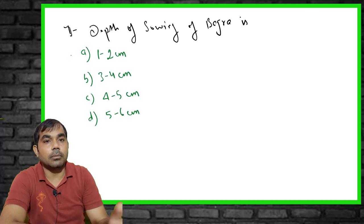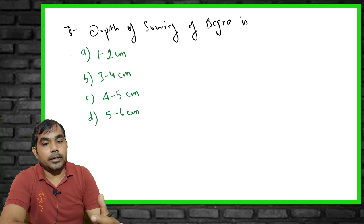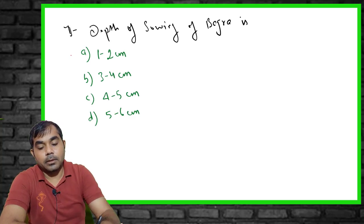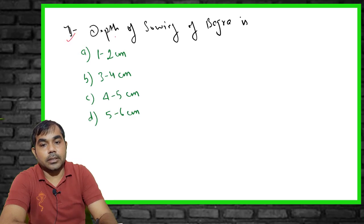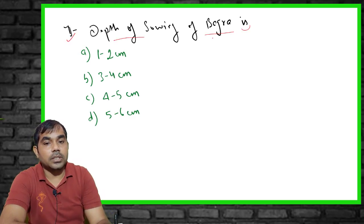In this video we will talk about 20 MCQs of agronomy and discuss them one by one. The first MCQ asks: what is the depth of sowing Bajra?